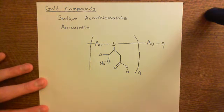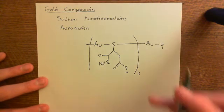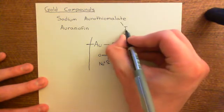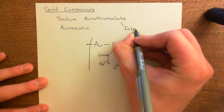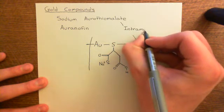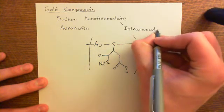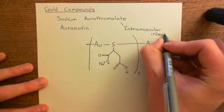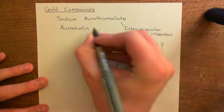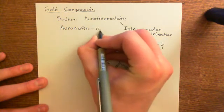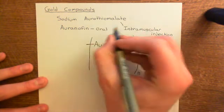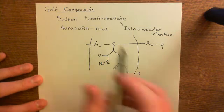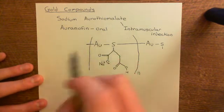Sodium aurothiomalate is given by intramuscular injection — it's not given orally; it's injected into the muscles like insulin. Auranofin, on the other hand, is given by oral administration. The mechanisms of these two drugs are not really known, especially not for sodium aurothiomalate.